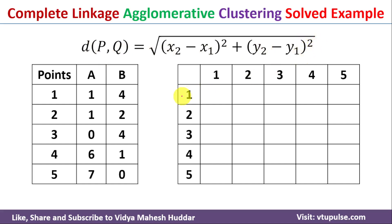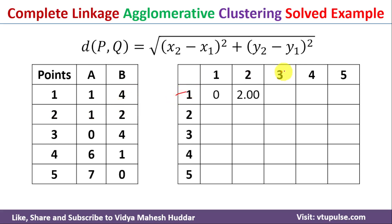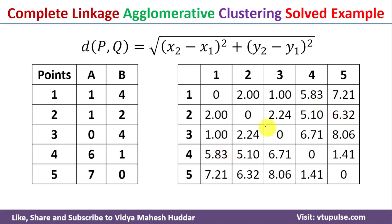First we will find the distance between data point 1 and 1, which gives us 0. Next we find the distance between data point 1 and 2: x1 is 1, y1 is 4, x2 is 1, y2 is 2. So 1 minus 1 is 0, plus 2 minus 4 is minus 2, and minus 2 squared is 4, so the square root of 4 is 2. Similarly we will find the remaining distances.